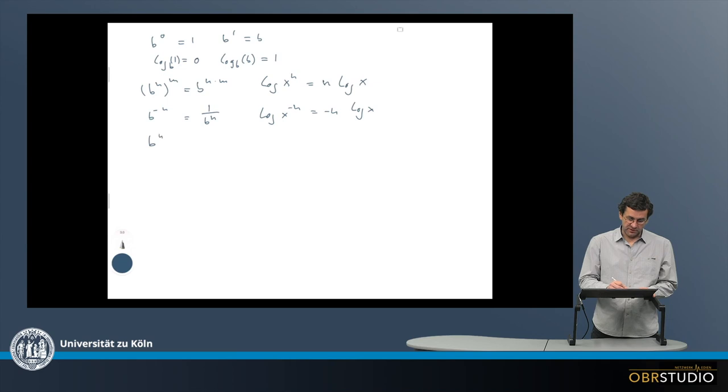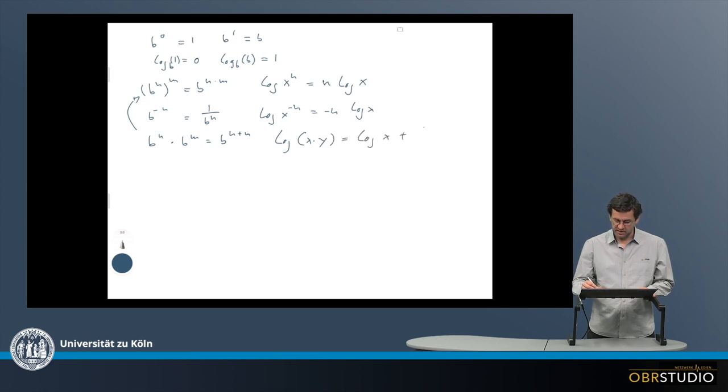Then b to the power of n times b to the power of m is the same as b to the power of n plus m, so it is a little bit different than this one here. Another one: the logarithm of x times y is the logarithm of x plus the logarithm of y.